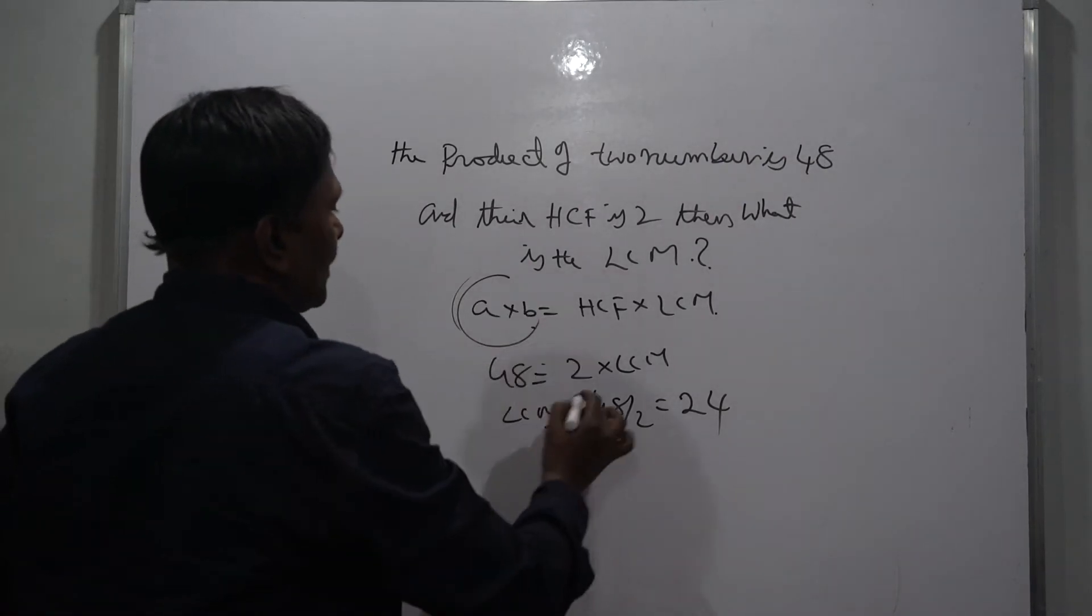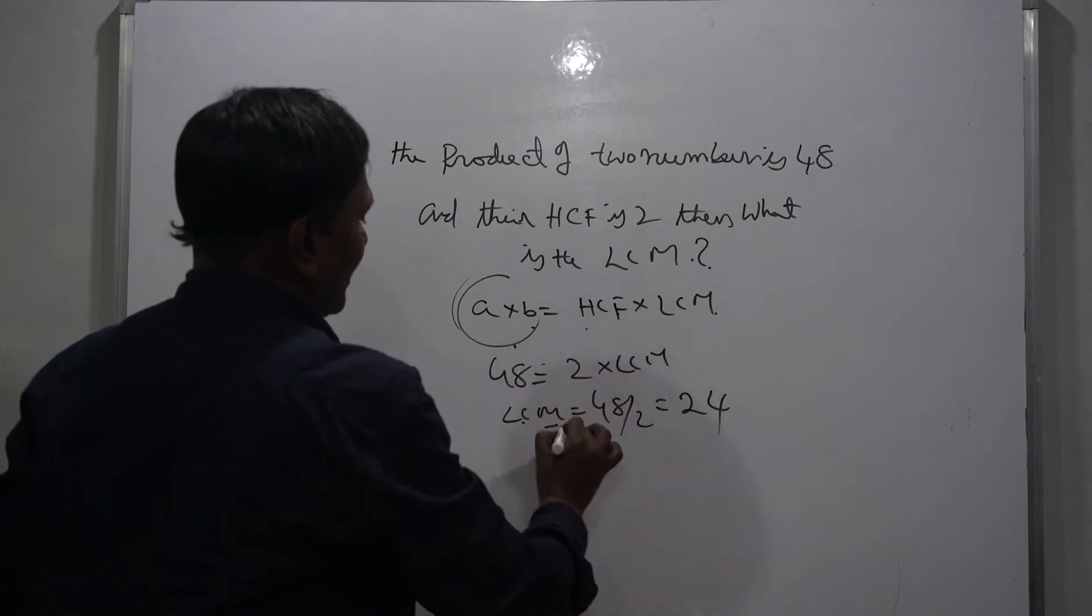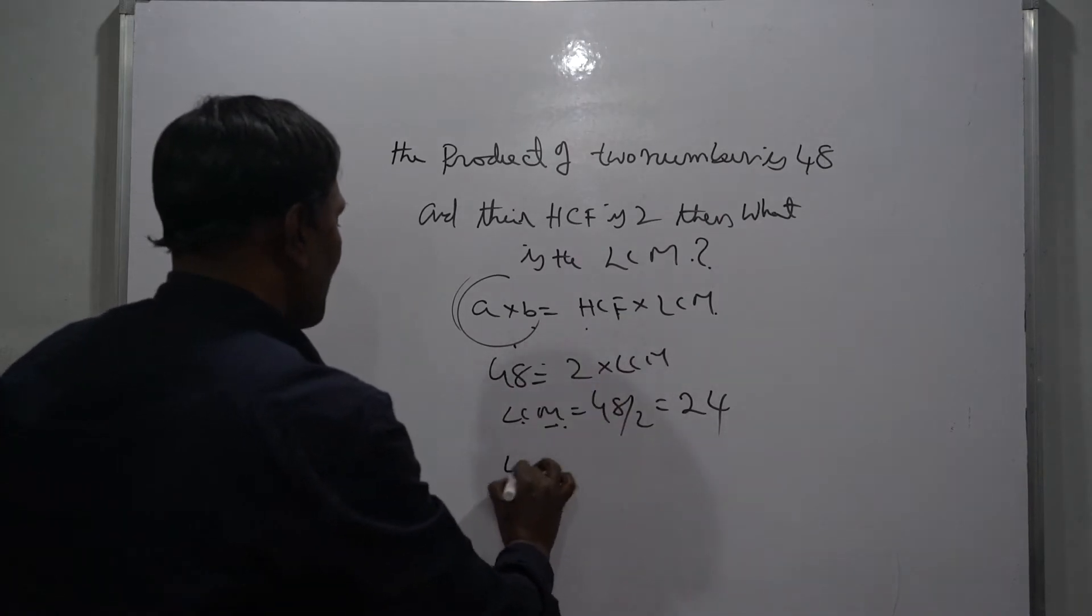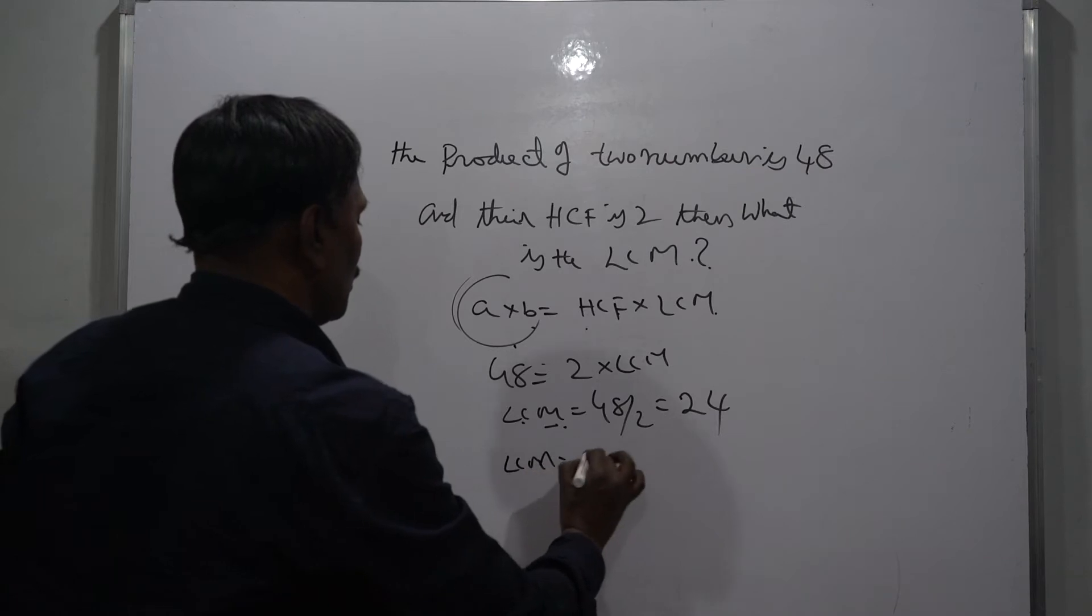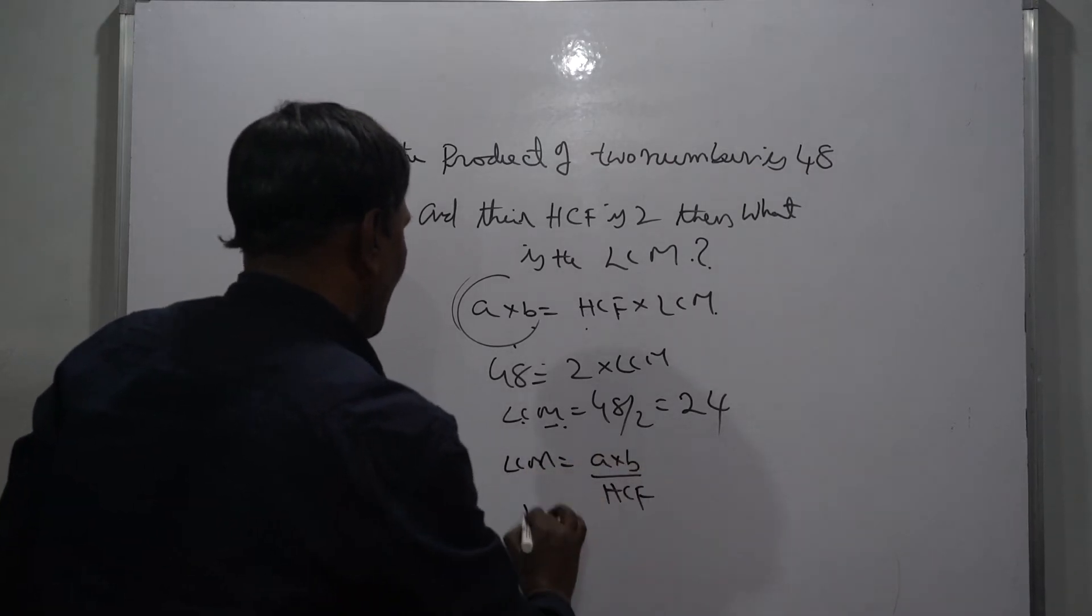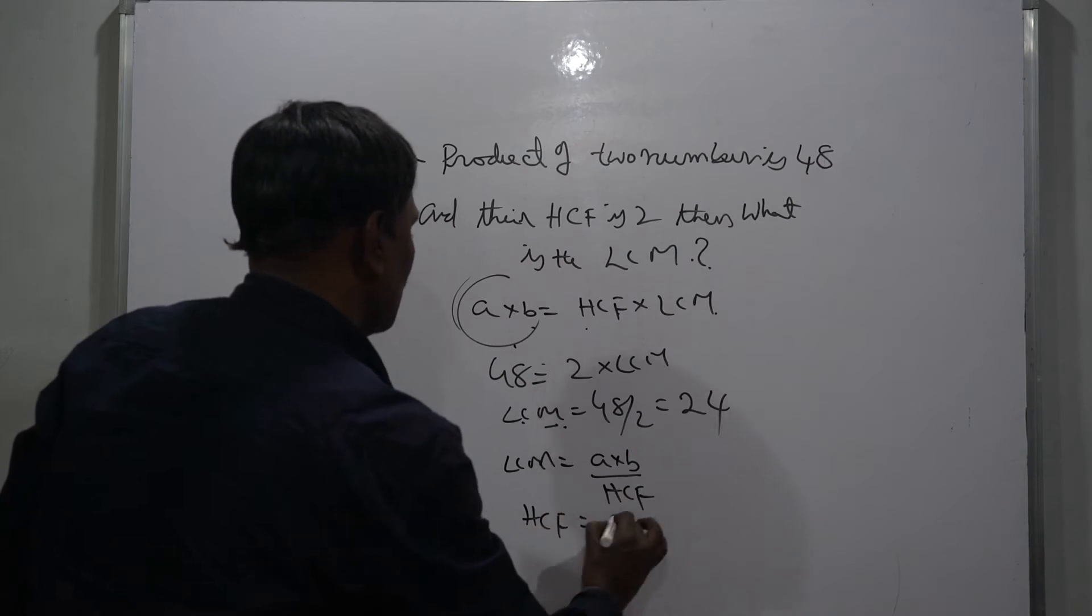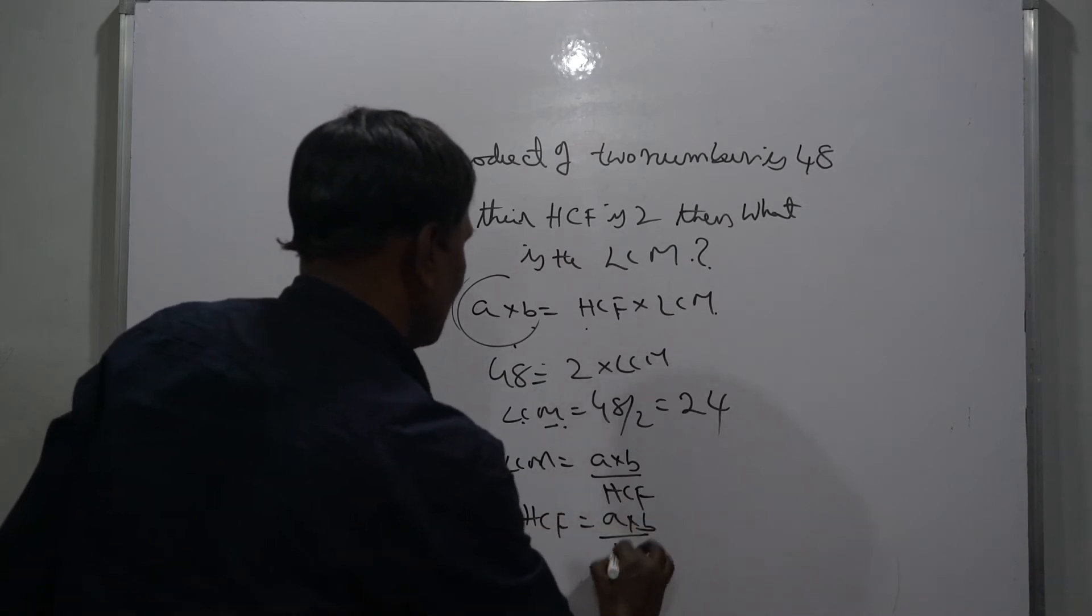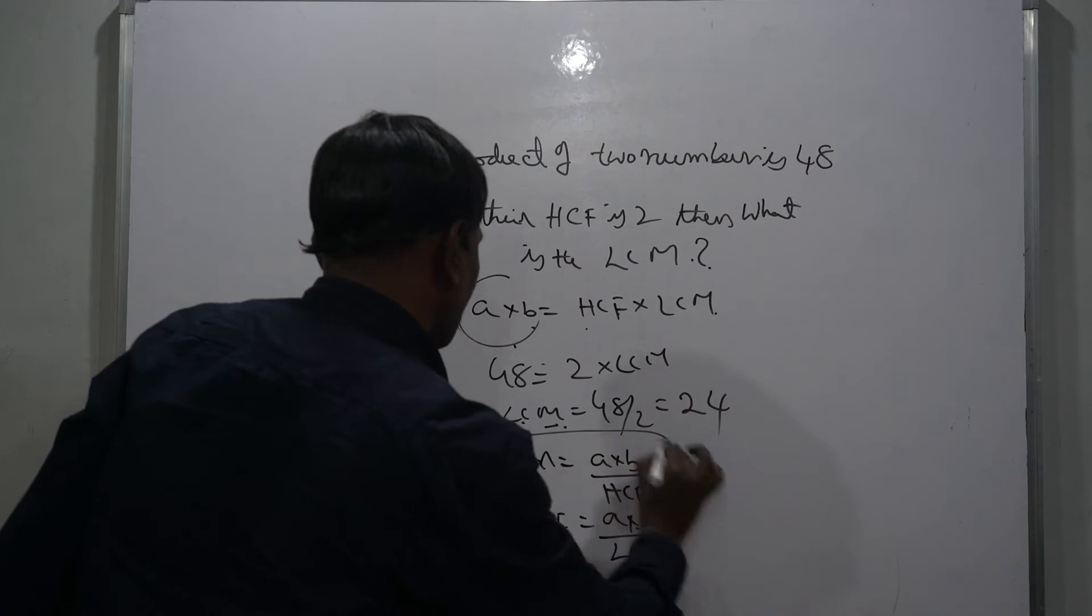If you want to find the LCM, the product of the two numbers divided by HCF you will get LCM. So LCM is equal to a into b by HCF, and HCF is equal to a into b by LCM. You should remember these two formulas.